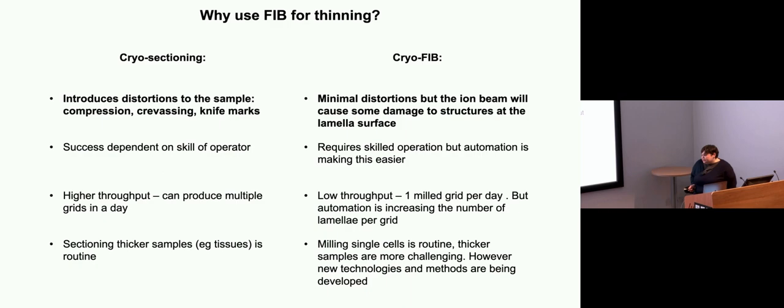For cryo-sectioning, this is quite good if you want to look at thicker stuff, this is very routine. Whereas FIB, I'd say it's routine for doing single cells or small cells, but the thicker samples at the moment are still a bit more challenging. But methods are very rapidly developing. So whilst I think the most popular choice is FIB because of these issues of distortions, if you just want something a bit qualitative, sometimes cryo-sectioning still does have some use.